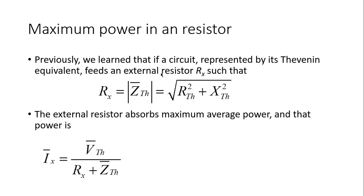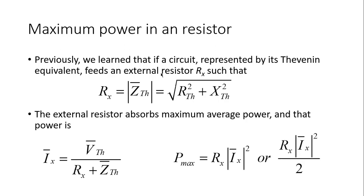The value of that power is computed by finding the current in that resistor — V_Thevenin divided by the series combination of the resistor and the Thevenin impedance — then computing R_X times the square of the RMS value of that current, and dividing by two if we have a peak value.